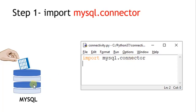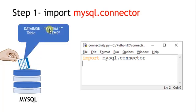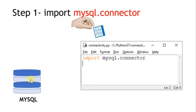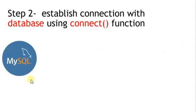The purpose of the mysql.connector module is to communicate with the MySQL server. It has well-defined functions to establish data connectivity and to do data manipulations. Looking at the diagram, we have database system one containing a table called 'items'. The purpose of this entire session is to take all the records from that table and bring them to Python.